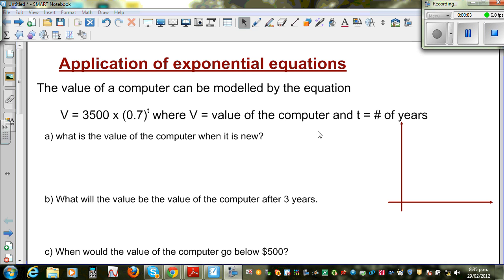Let's look at a question on the application of exponential equations. The value of a computer can be modeled by the equation V = 3500 × (0.7)^t, where V is the value of the computer and t is the number of years.